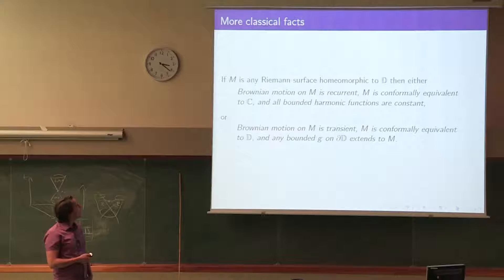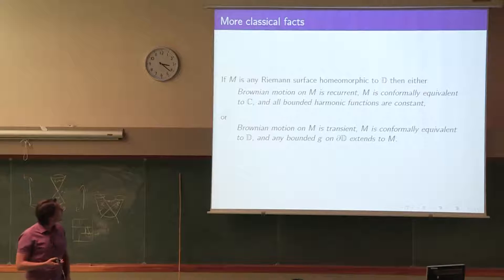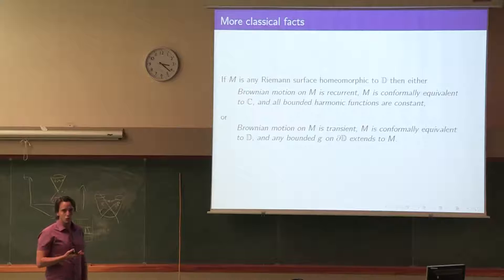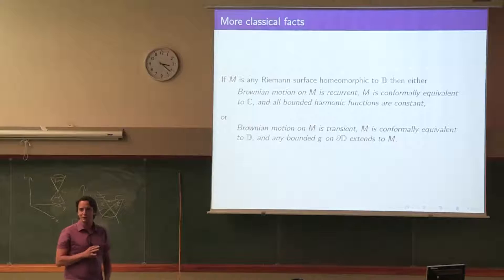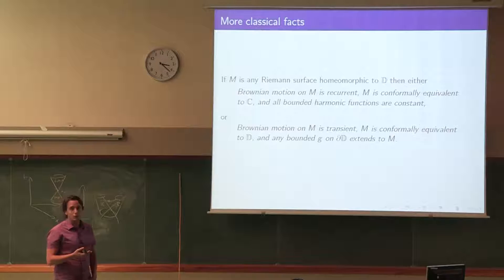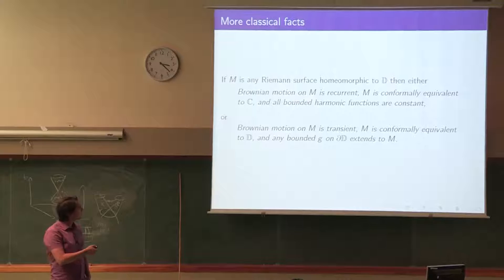Something much stronger is known. In the world of surfaces, there's a complete dichotomy, and the behavior of Brownian motion on the surface determines what type the surface is. You have two types of non-compact surfaces. It can either be parabolic, in which Brownian motion is recurrent — it returns to every region infinitely often. In this case, the manifold or surface will be conformally equivalent to the complex plane, and there are no non-constant bounded harmonic functions.